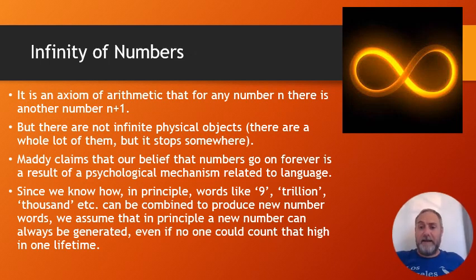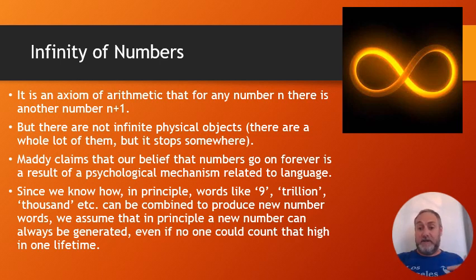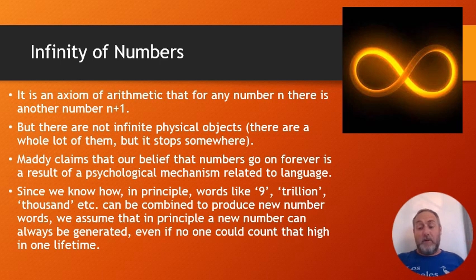One worry for the claim that numbers are physical things is that for any number there is another number after it — numbers are infinite. But there is not an infinite number of physical objects. There are a whole lot of physical objects, particularly if you count individual atoms, but it does stop somewhere. Just like the argument against conceptualism — even though there's a ton of ideas out there in the world, they're not infinite, they stop somewhere — same with physical objects. Numbers don't stop anywhere; they're infinite.